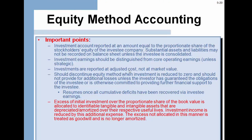Some important points on the equity method: the investment account reported equals the proportionate share of the stockholders' equity. Substantial assets and liabilities may not be recorded on the balance sheet unless the investee is consolidated. Investment earnings should be distinguished from core operating earnings, because they're not part of the core business. Investments are reported at adjusted cost, not market value. You should discontinue the investment when the investment is reduced to zero and should not provide for additional losses unless the investor can guarantee them.